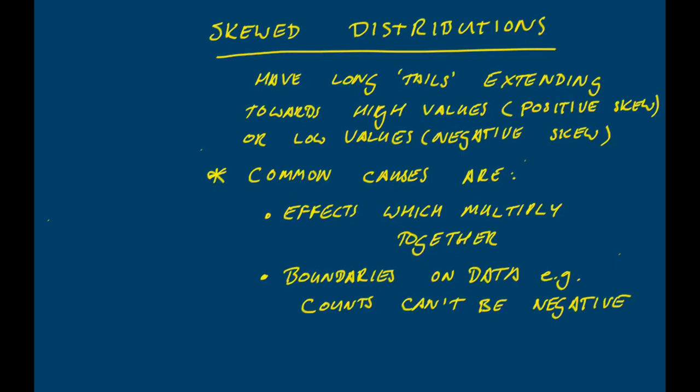If there's a high boundary to the data, that can give you a negatively skewed distribution. Negatively skewed distributions are quite rare, but I'll show you one example of that later on.